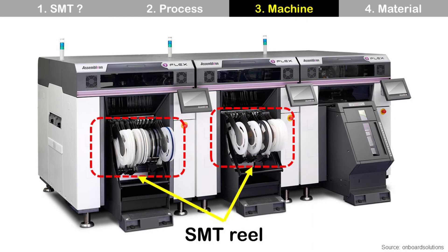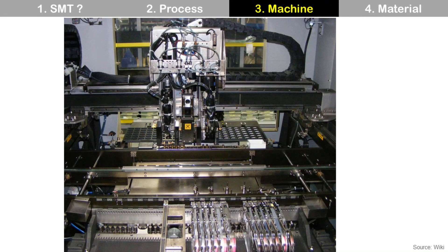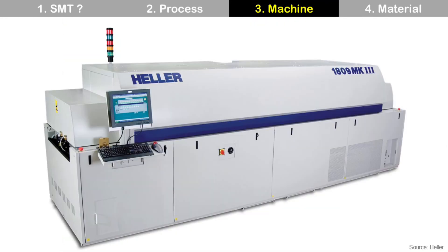This is the SMD placement machine, also called a chip mounter. At the front side, you can see SMT reels, which provide SMDs. A reel looks like this, and it has a lot of pockets. Some reels have very small passives, and others have larger packages. Inside the SMD placement machine looks like this.